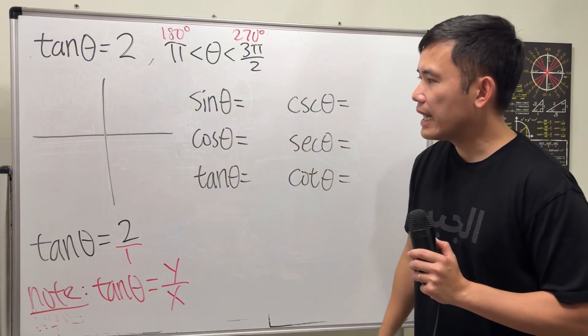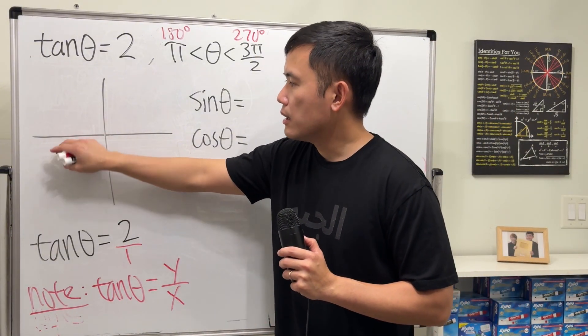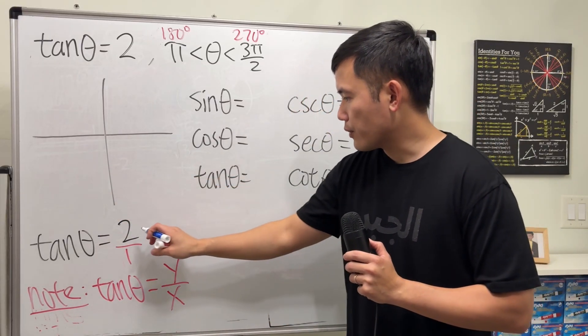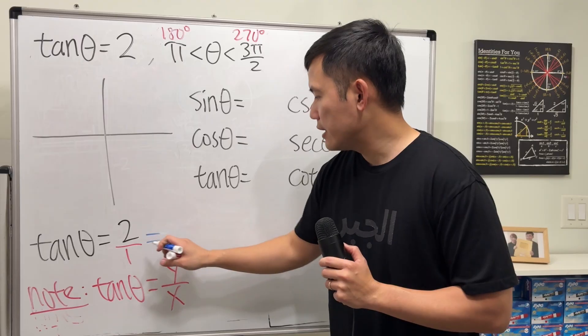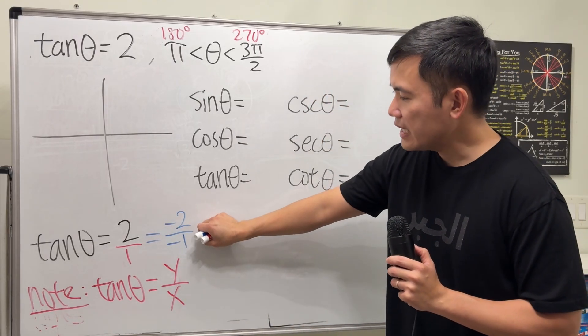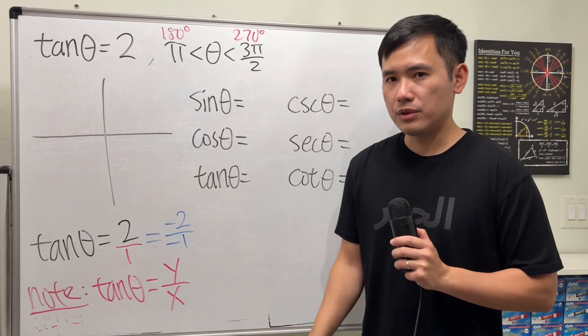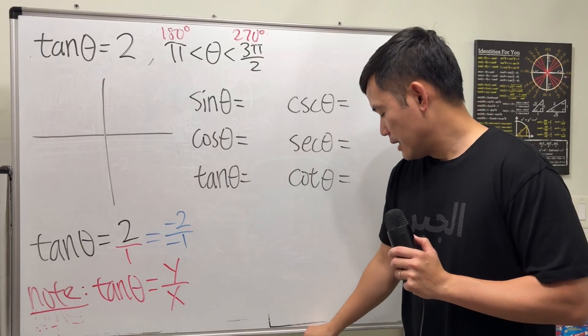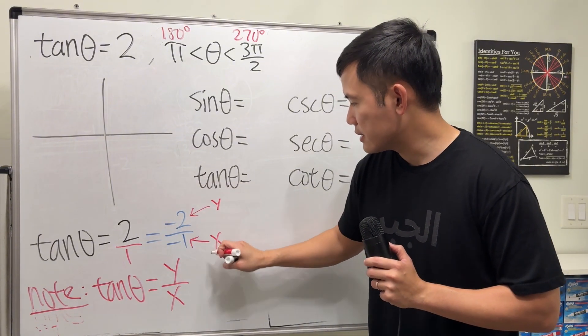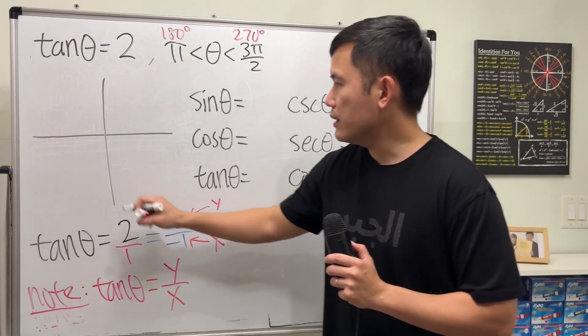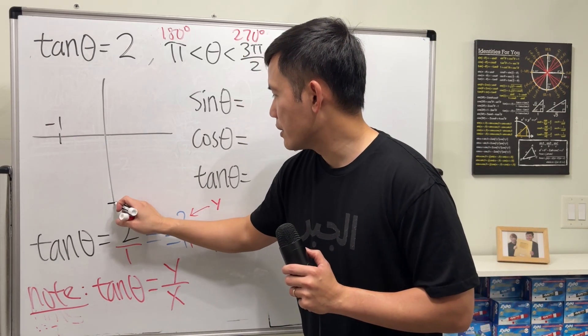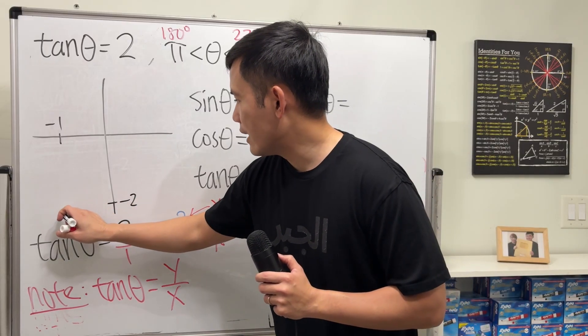The key for this question is that in the third quadrant, both x and y are negative. So in fact, for the 2 over 1, we are going to look at this as negative 2 over negative 1. When you divide them, we still end up with positive 2, so this is correct. Now, x is negative 1, let's say somewhere right here, and y is negative 2, somewhere down here. So we have a point right here.